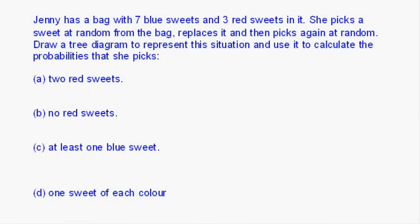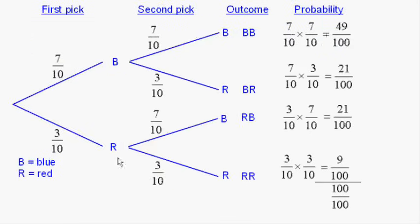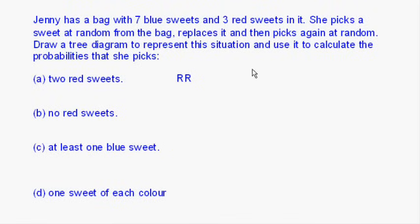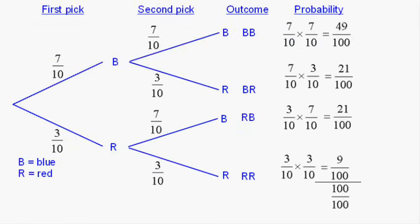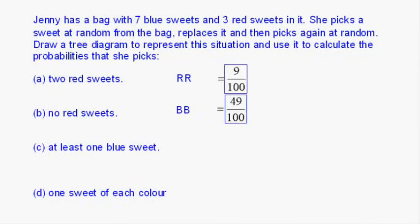Now let's look back at the question. We need to work out the probability that she picks two red sweets. Well, we've actually done that one. It's this number here, nine hundredths. There we are, the answer to that first part. Second part, no red sweets. Well, the only thing which has no red sweets in it is the blue-blue combination. And we've already calculated that. That's 49 hundredths.